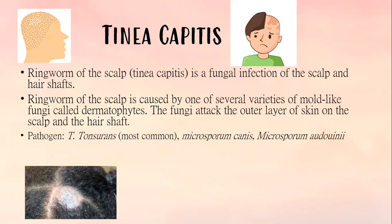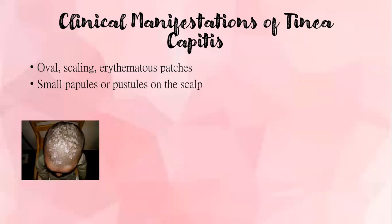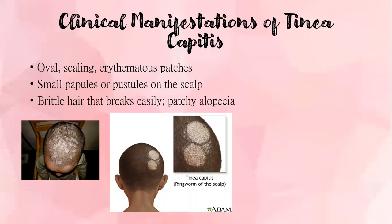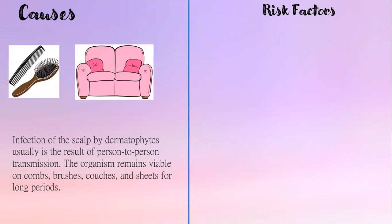For the clinical manifestations of tinea capitis, we have oval scaling erythematous patches, small papules or pustules on the scalp, brittle hair that breaks easily, or patchy alopecia. Infection of the scalp by dermatophytes is usually the result of person-to-person transmission. The organism remains viable on combs, brushes, couches, and sheets for a long period.